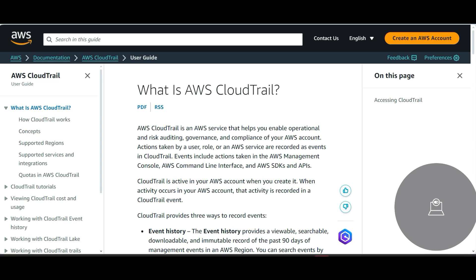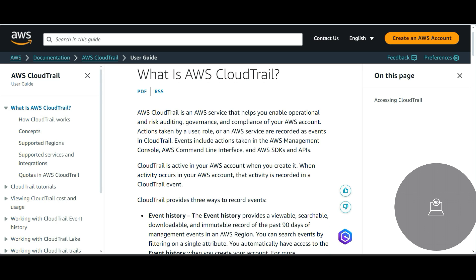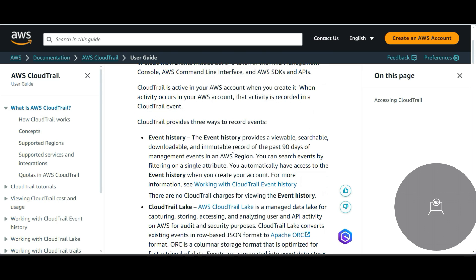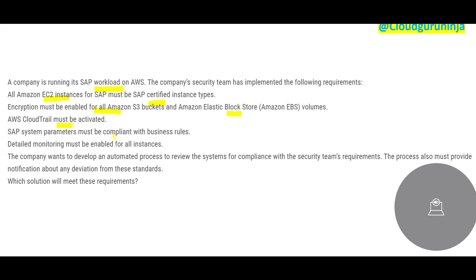CloudTrail captures each and every activity happening in the account — you can see event history, CloudTrail Lake, and so on. System parameters must be compliant with business rules, and detailed monitoring should be enabled on all instances, meaning CloudTrail should be monitoring each and every instance and all activities.